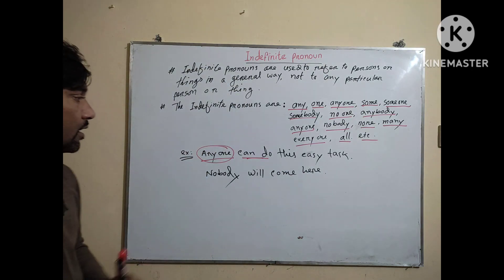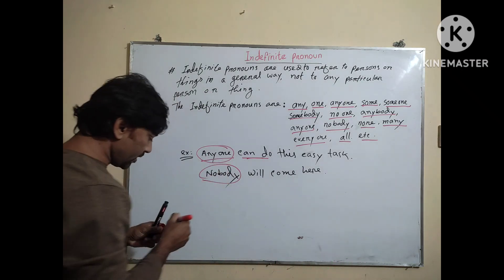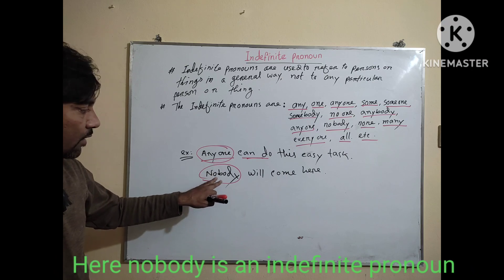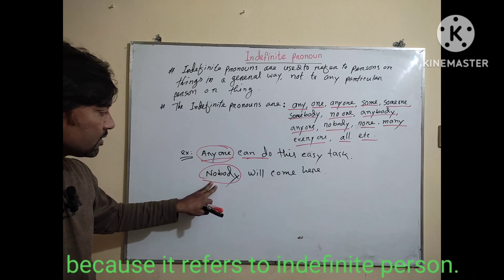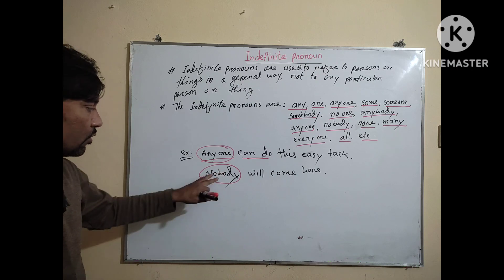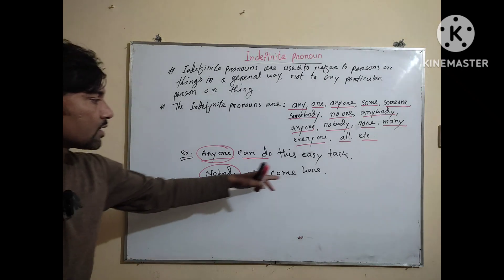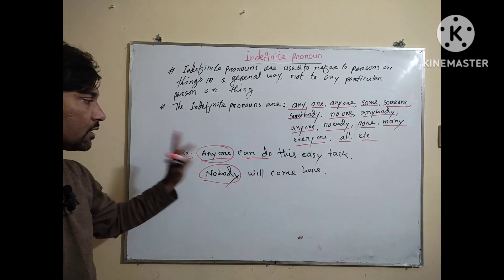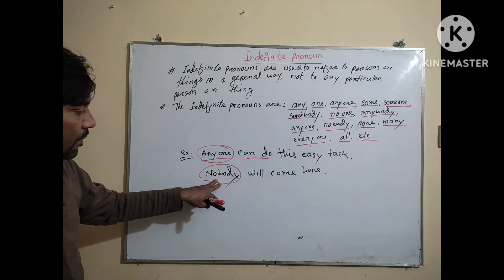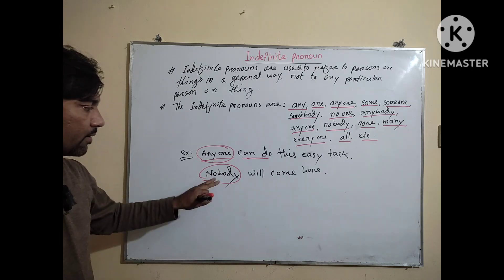Nobody will come here. In this sentence, 'nobody' is an indefinite pronoun because it refers to an indefinite person. That's why 'nobody' is an indefinite pronoun here.